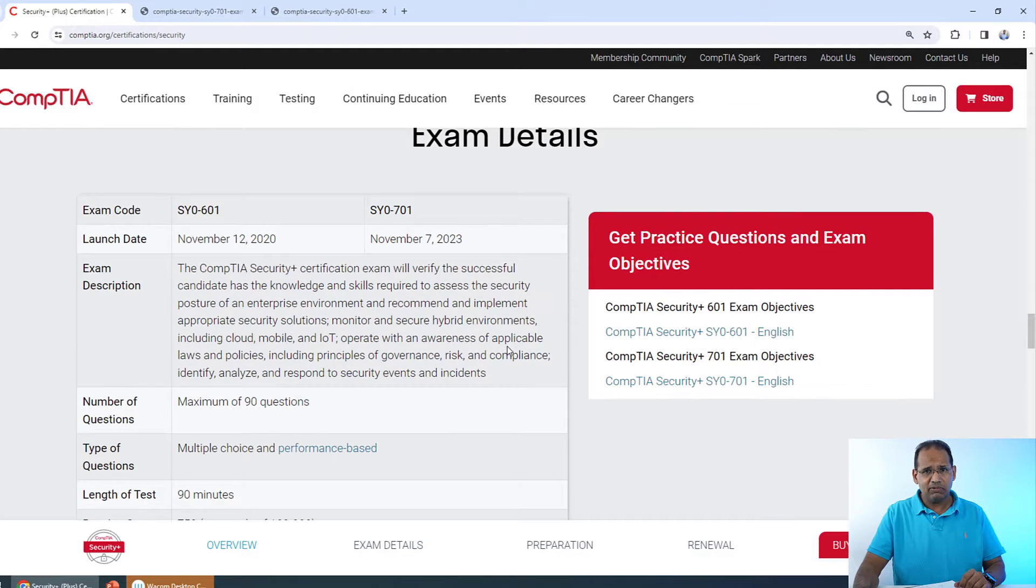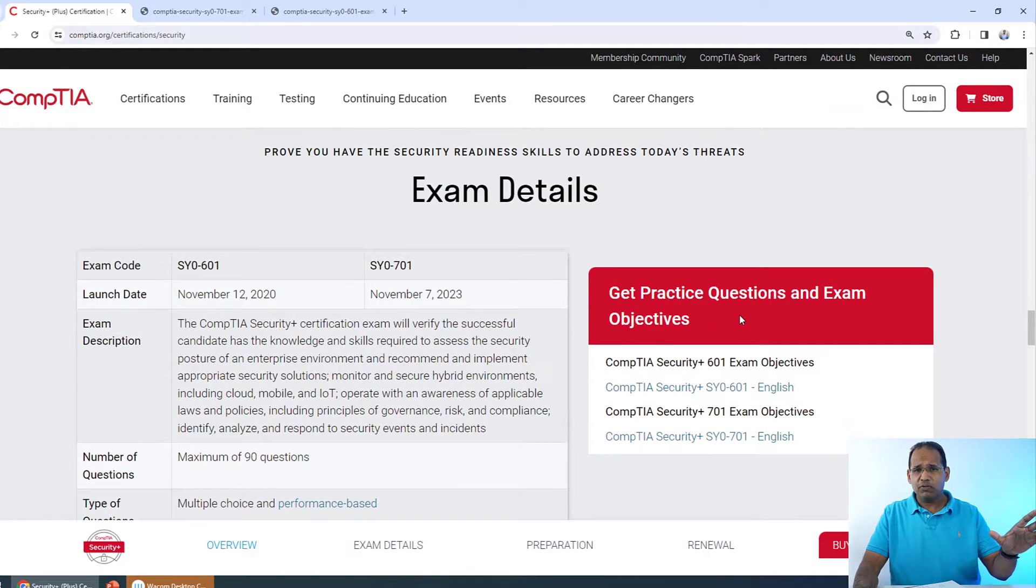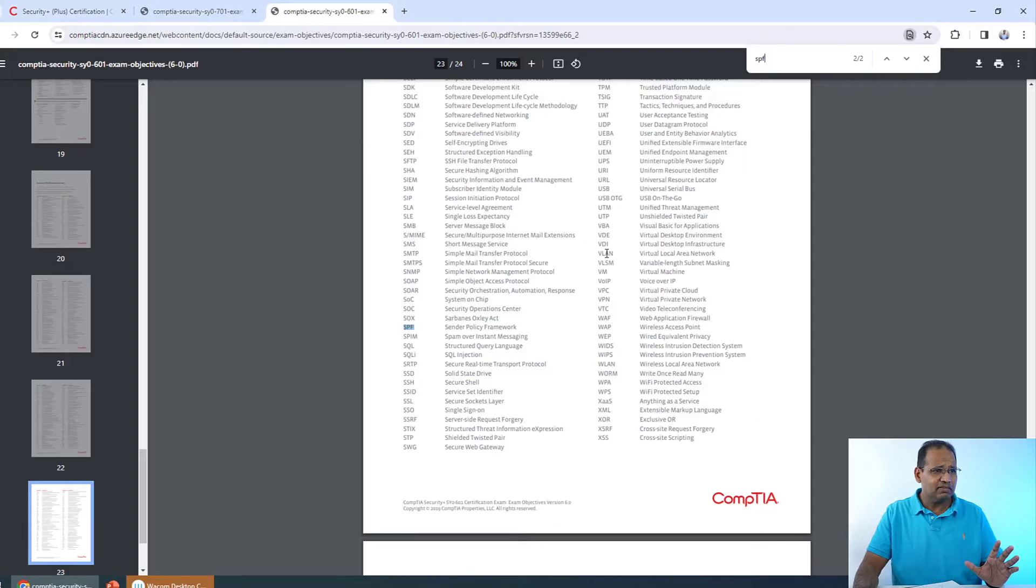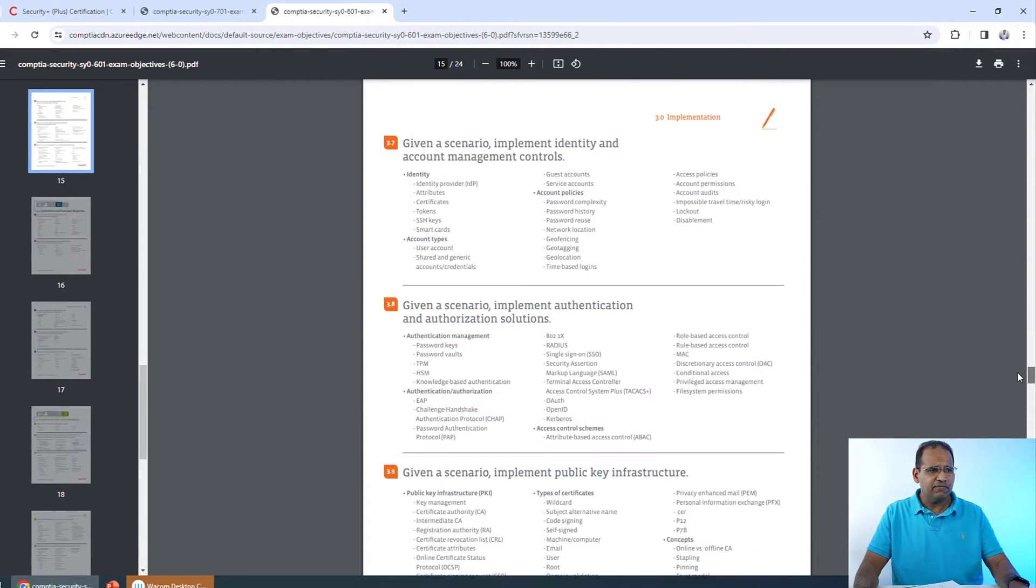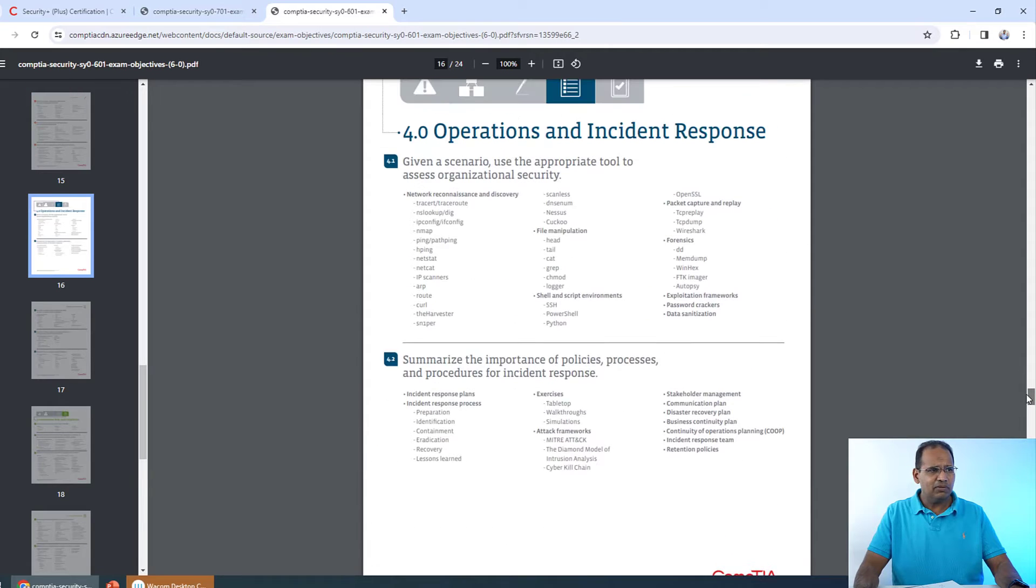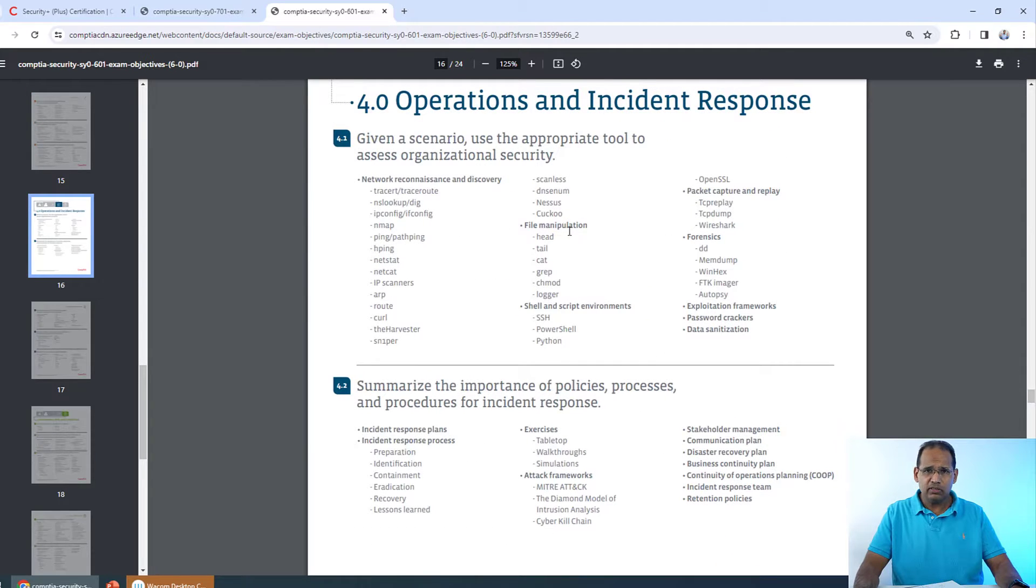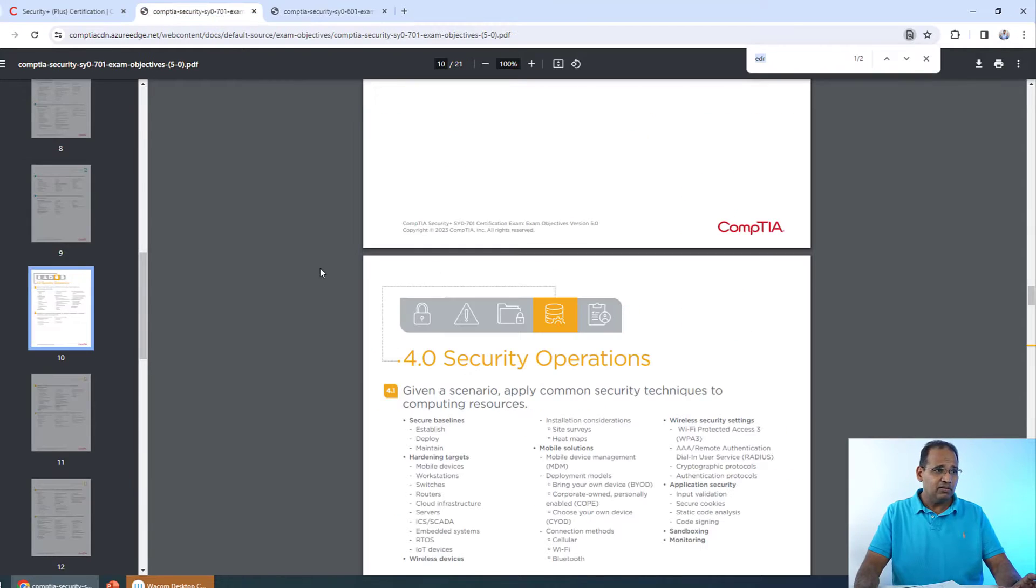So I've downloaded the exam objectives. This is on the CompTIA website. There's a form you fill out and you can get the exam objectives. So I got the SYO-601 and the 701. So if I look at the 601 and I want to show you guys that if I look into this, in the exam objectives, like 4.1 in the 601 exam, you have to know things like all these great commands. Look at all this. This is not in the 701. Nowhere in the 701 does it have any commands.